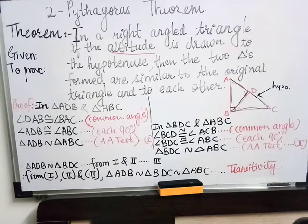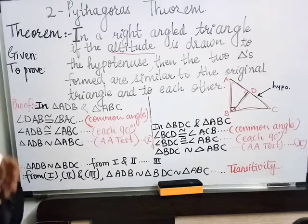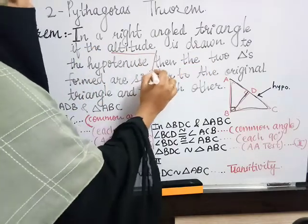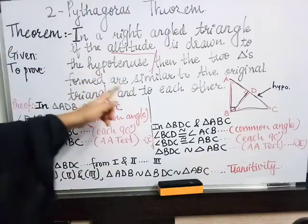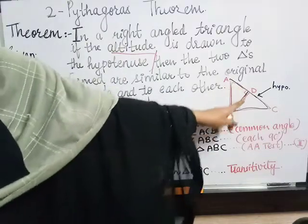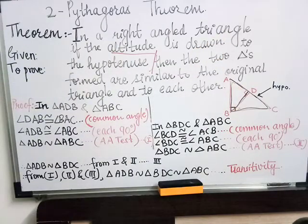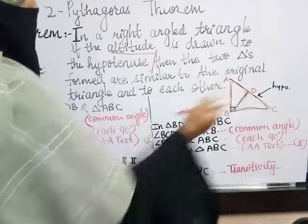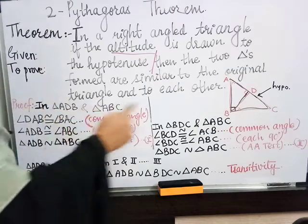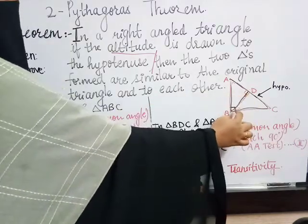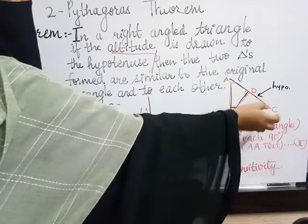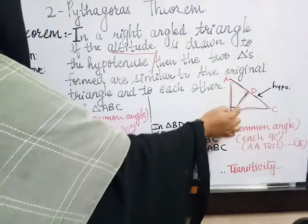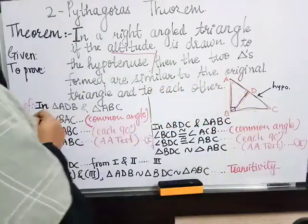In the To Prove section, we have to prove that the two triangles formed are similar to the original. So triangle ADB is similar to triangle ABC. Next, triangle BDC is similar to triangle ABC. And third, triangle ADB is also similar to triangle BDC — that is, the two formed triangles are similar to each other.